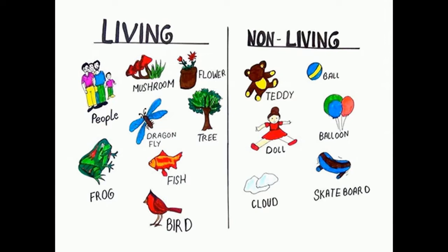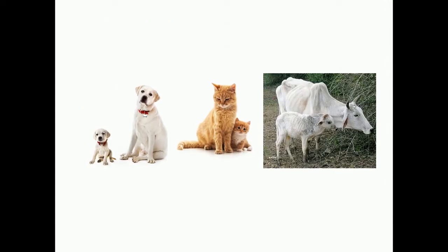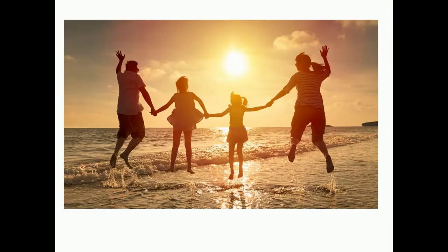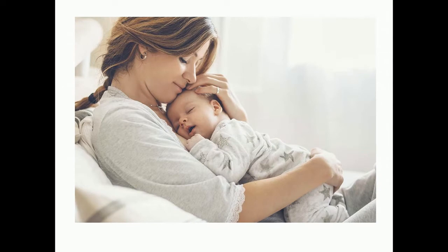Living things such as dogs give birth to puppies, cats give birth to kittens, or cows give birth to calves. All of you must be having brothers or sisters at home — this means human beings also give birth to young ones which we call babies. This process by which living beings give birth to young ones of their own kind is called reproduction.